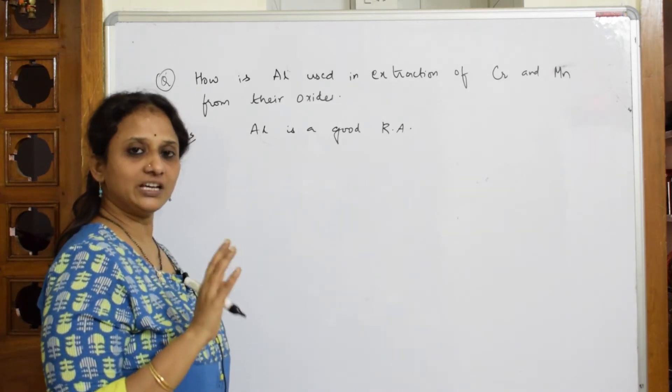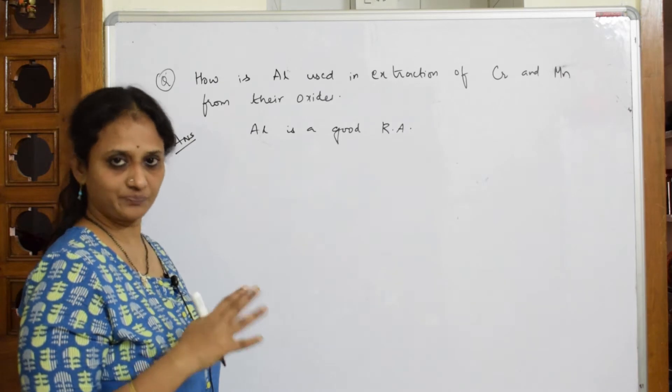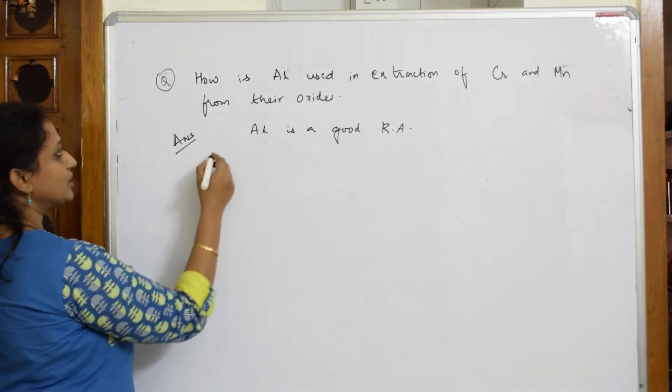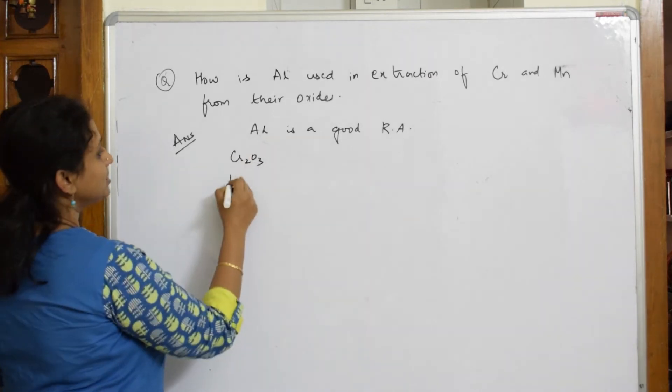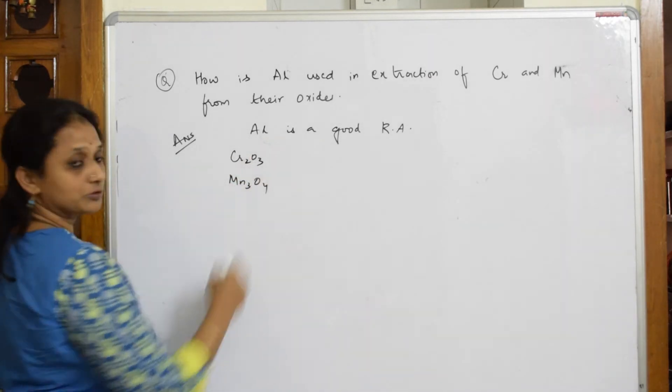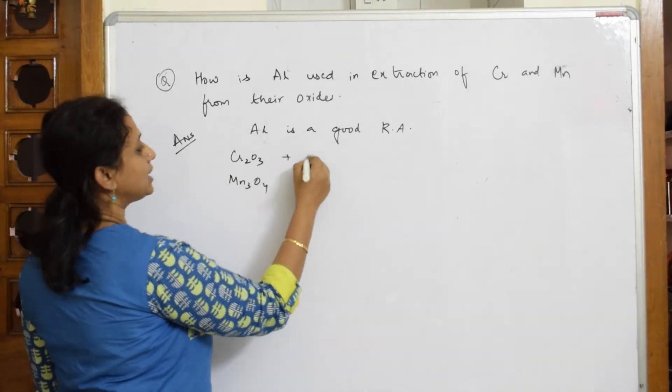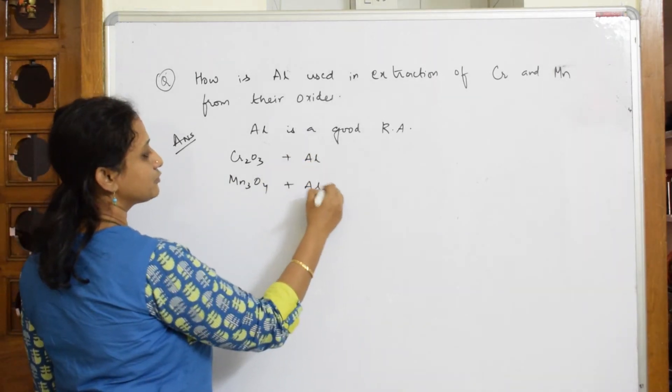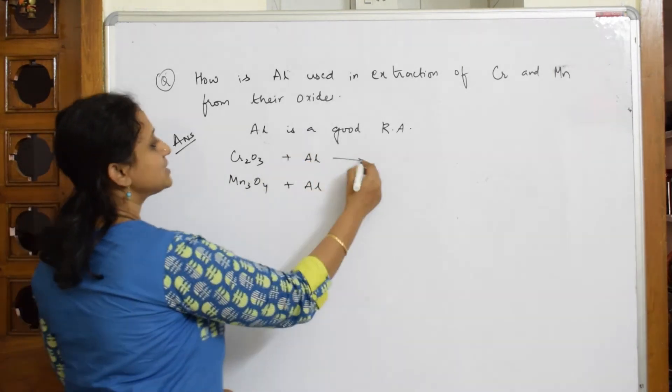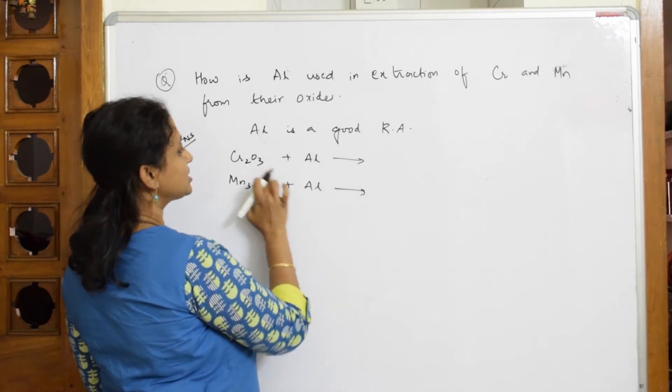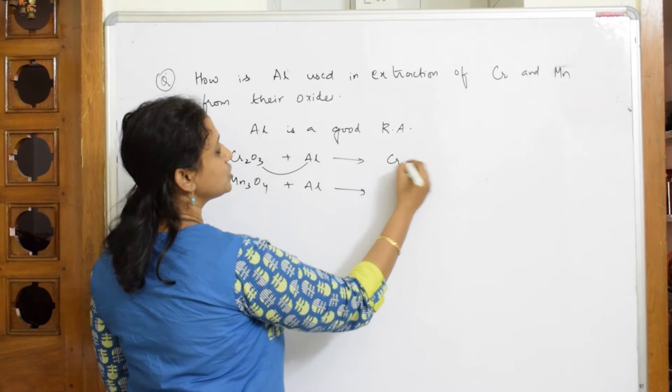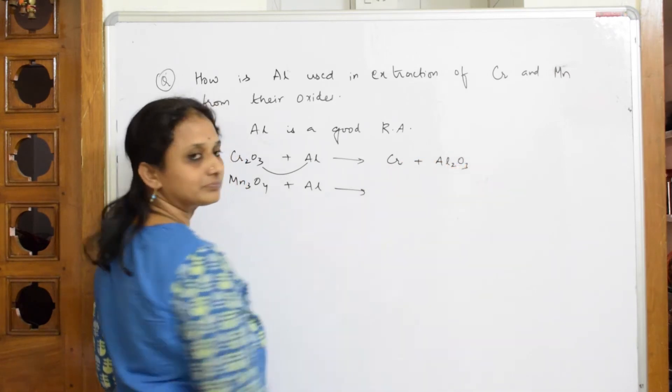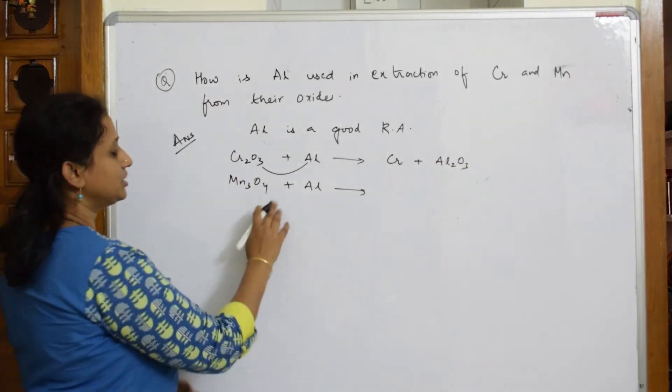So what happens here when I'm going to take oxides of chromium, chromium oxide is Cr2O3, and manganese oxide is Mn3O4. Now when I'm going to add aluminum to this, both I have to show the reactions. Now I said this is a reducing agent. It itself gets oxidized. Aluminum gets itself oxidized to Cr2O3 plus Al2O3. Aluminum is the reducing agent.